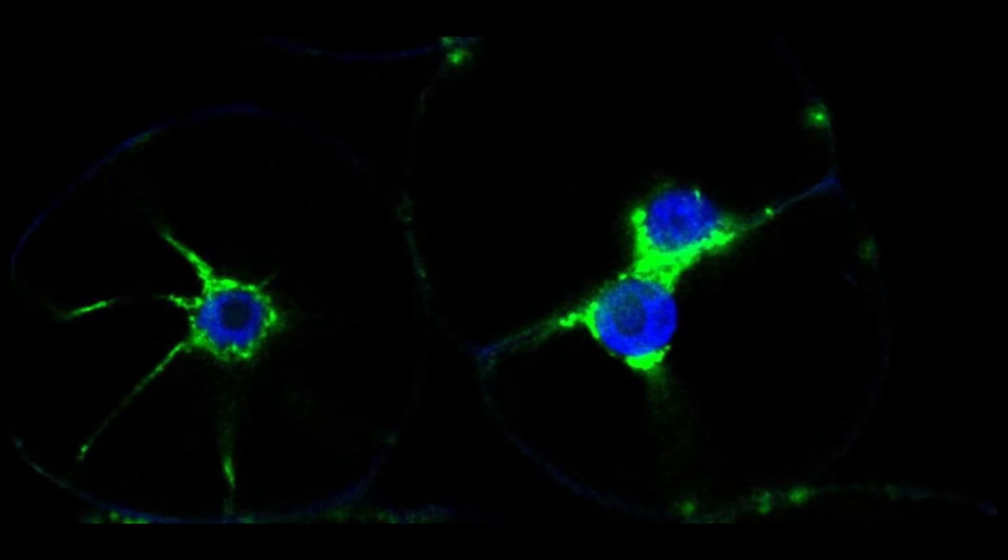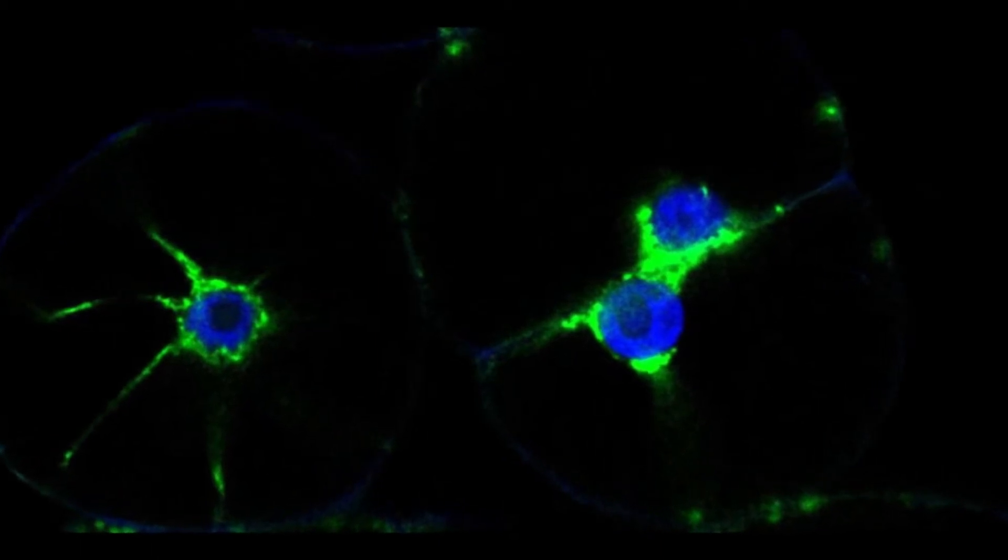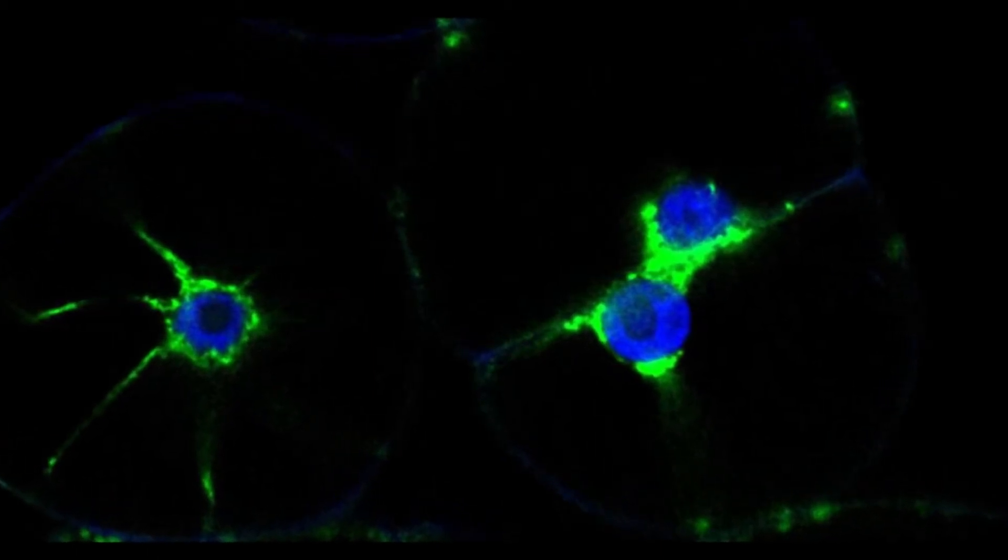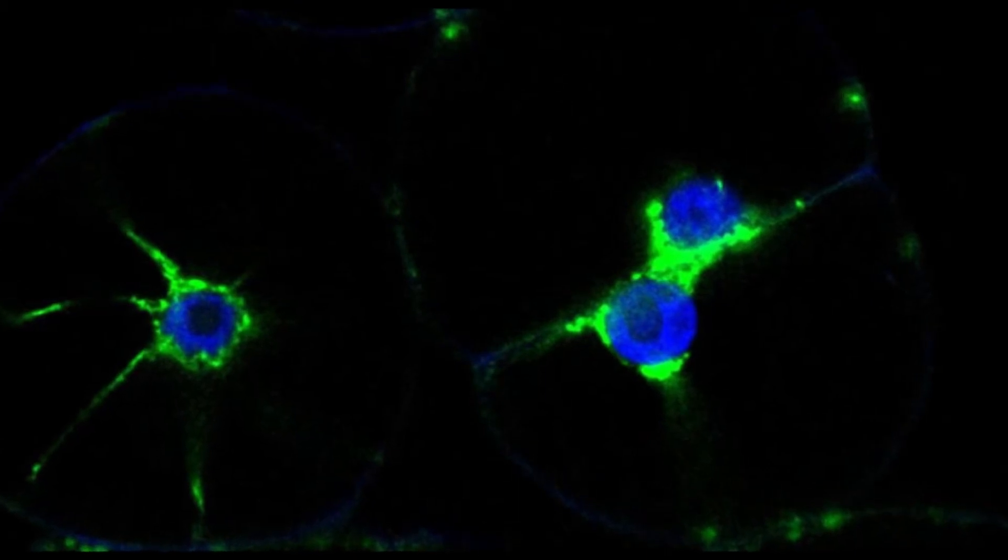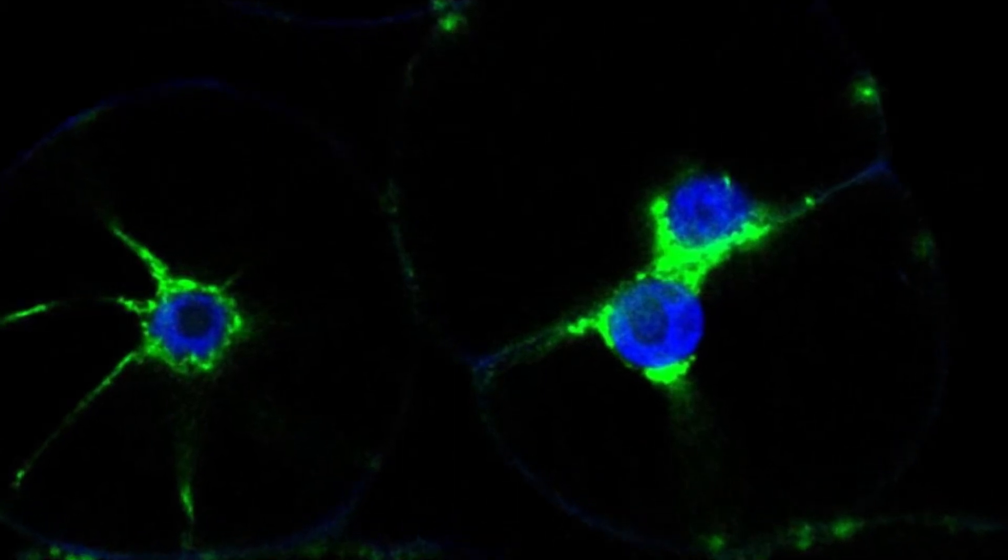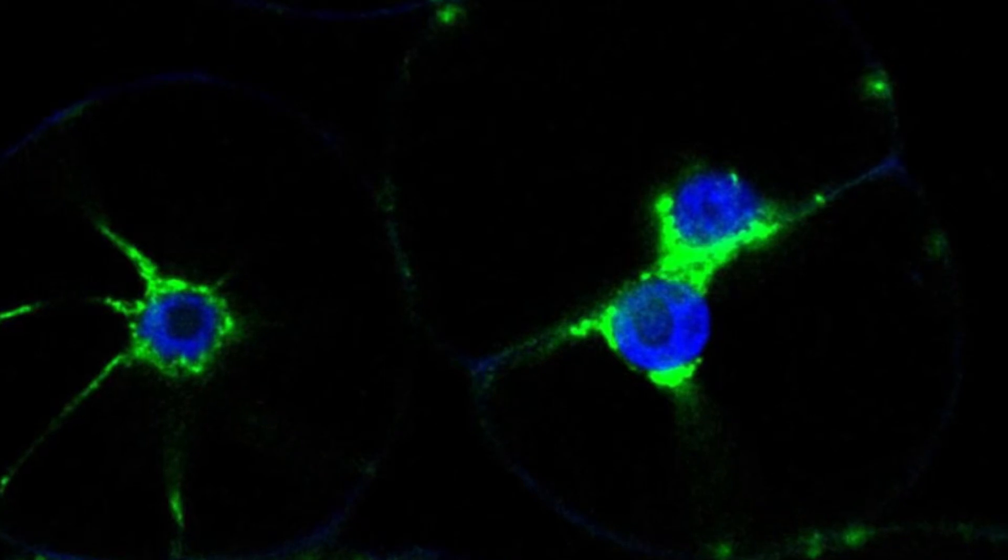Here is an image of tobacco cells. Plastids are labeled with green fluorescent protein, or GFP, and the nuclear DNA is labeled with DAPI. The plastids are shown surrounding the nucleus.